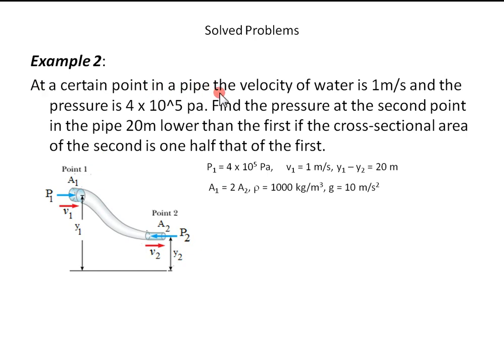Example 2: At a certain point in a pipe, the velocity of water is 1 meter per second, and the pressure is 4 times 10 to the power of 5 pascals. Find the pressure at the second point in the pipe 20 meters below. The second point is 20 meters below the first point, and the cross-sectional area of the second is one half that of the first.